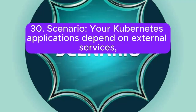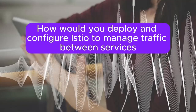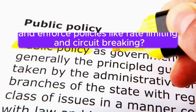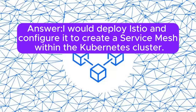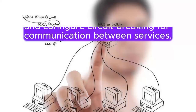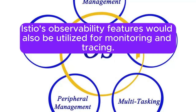Scenario 30: Your Kubernetes applications depend on external services and you want to implement a service mesh to enhance communication, monitoring, and security. How would you deploy and configure Istio to manage traffic between services and enforce policies like rate limiting and circuit breaking? Answer: I will deploy Istio and configure it to create a service mesh within the Kubernetes cluster. Virtual services and destination rules would be defined to manage traffic routing, enforce rate limiting, and configure circuit breaking for communication between services. Istio's observability features would also be utilized for monitoring and tracing.